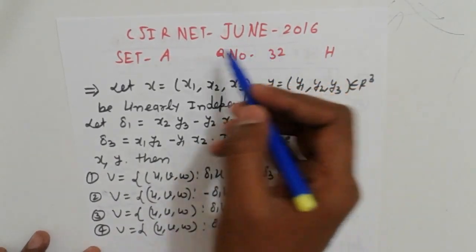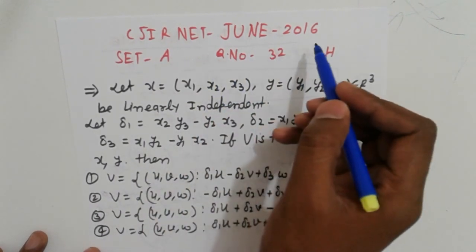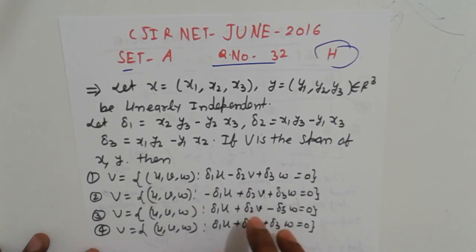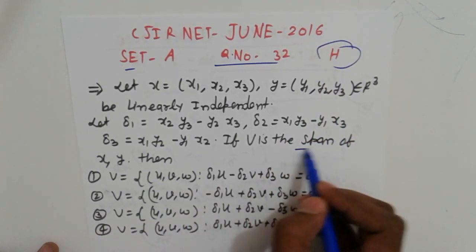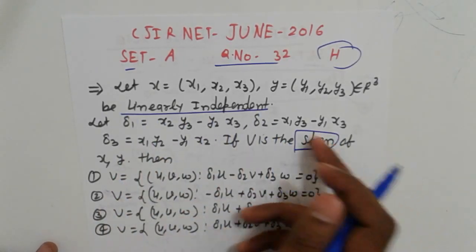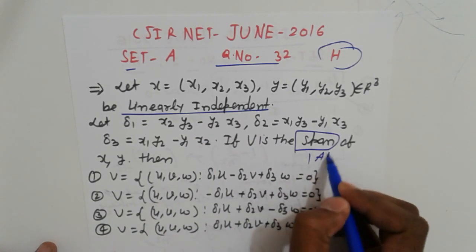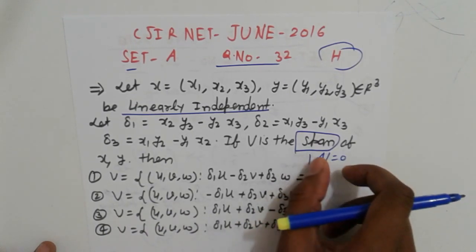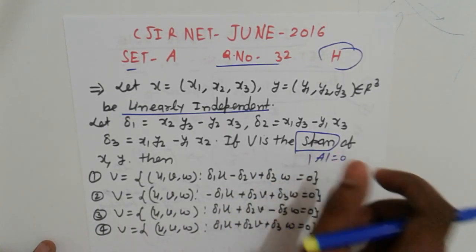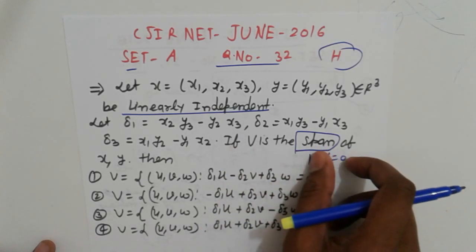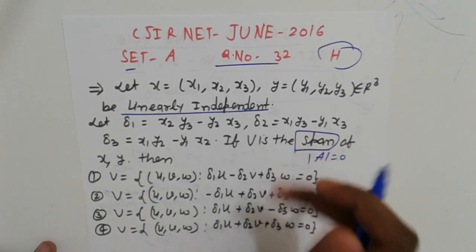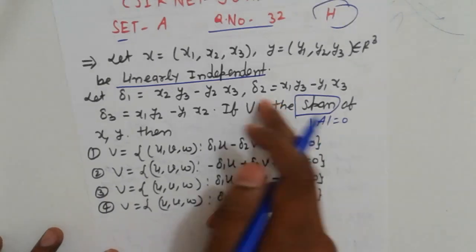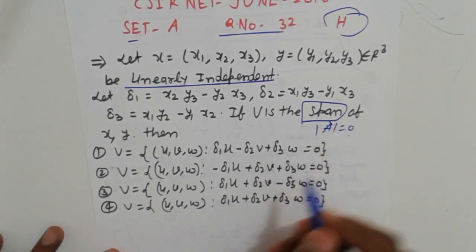Hello friends, good morning. This is another problem from CSIN, June 16, Set A, equation number 32, medium Hindi. This is a problem of linear span. Span means vectors written in matrix form, and if the determinant is equal to zero, that means we find the relation between the given vectors — linear independence and dependence.